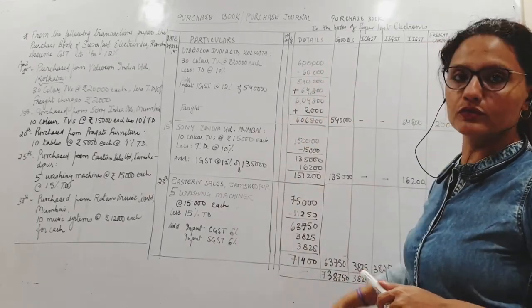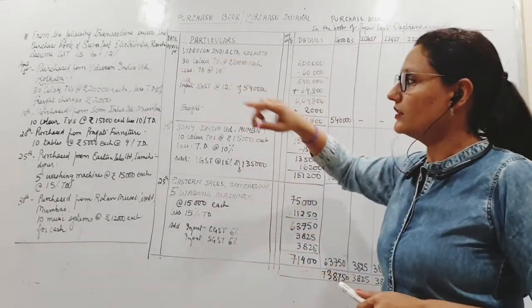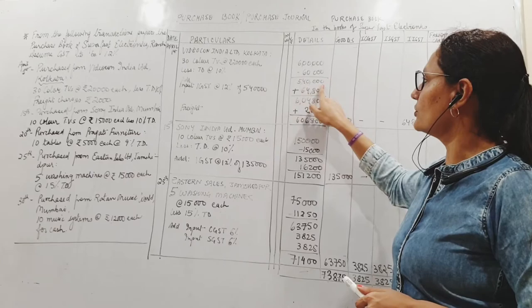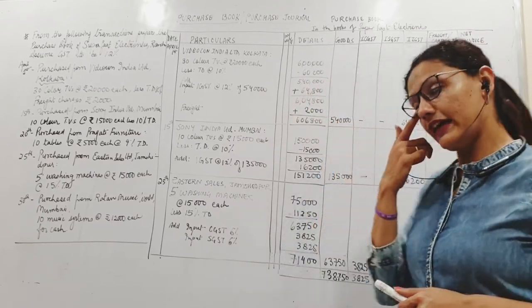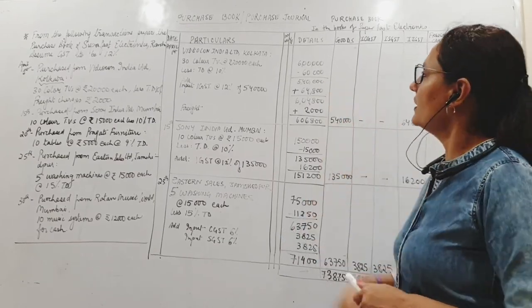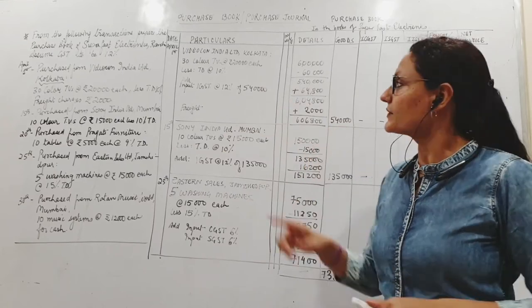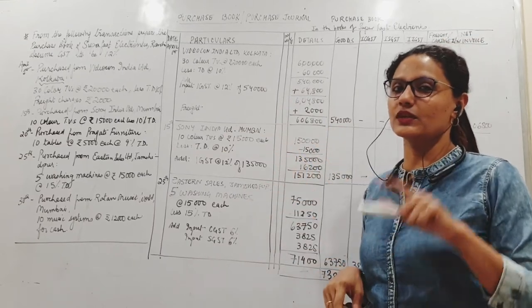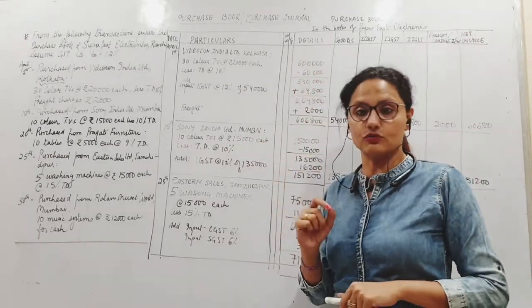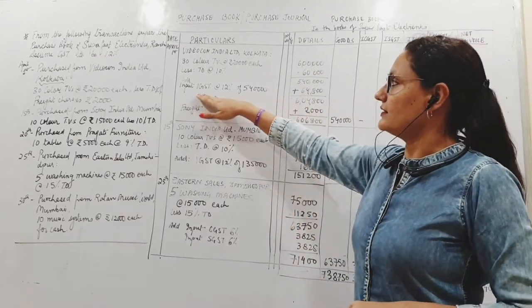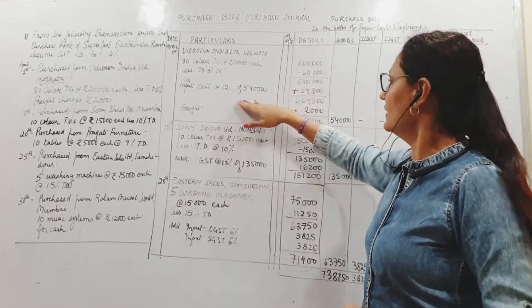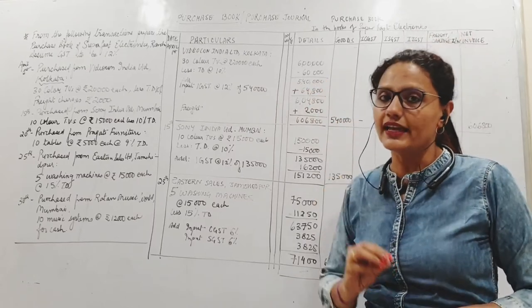Less trade discount 10 percent of 6 lakhs is 60,000. This gives you your purchase price - 5 lakh 40,000 is your purchase price, discounted by the trade discount. On this you will charge tax, so input IGST. Please don't forget the word input here, because purchase always input is related, sales we will write output. Input IGST 12 percent of 5 lakh 40,000, my purchase price, that is coming to 64,800. This is the total tax liability, tax payment that I have to do.